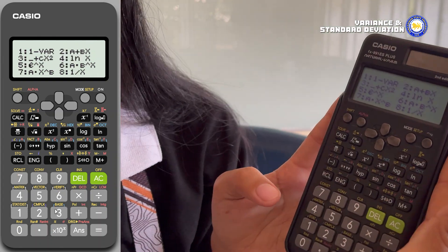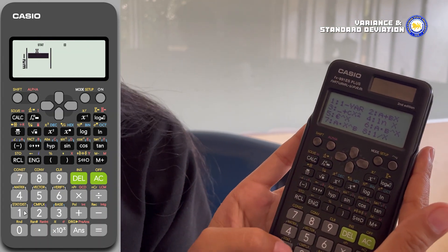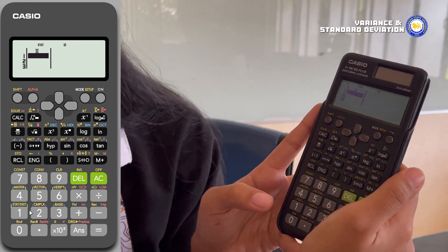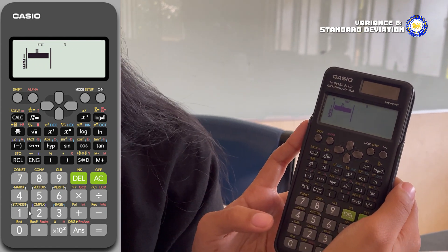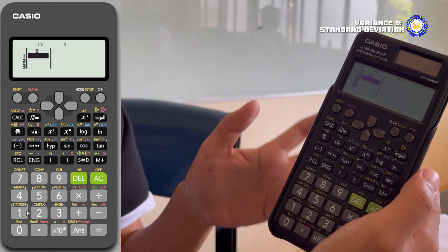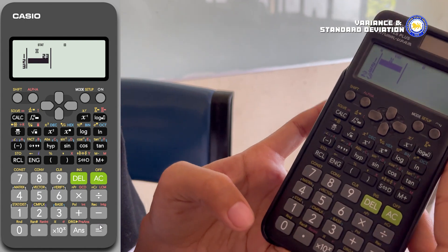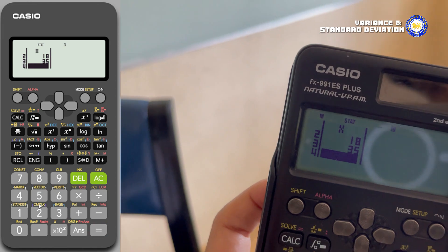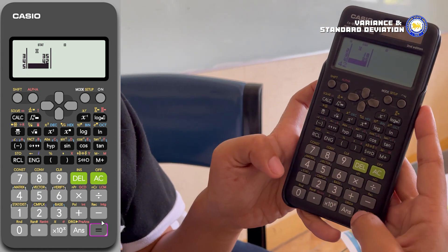Step two will be inputting data. Now let's key in our dataset: 23, 18, 35, 42, and 30. Once you've entered the last number, which is 30, press AC.